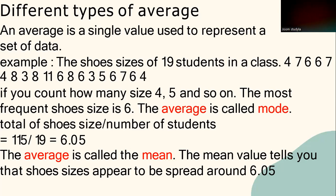The mean value tells you that the shoe sizes appear to be spread around the value of 6.05. It also gives you a good impression of the general size of the data. Notice that the mean in this case is not a possible shoe size. The mean is sometimes referred to as the measure of central tendency of the data. Another measure of central tendency is the middle value when the shoe sizes are arranged in ascending order. For example, you have a list of shoe sizes: 3, 3, 4, 4, 4, 5, 6...